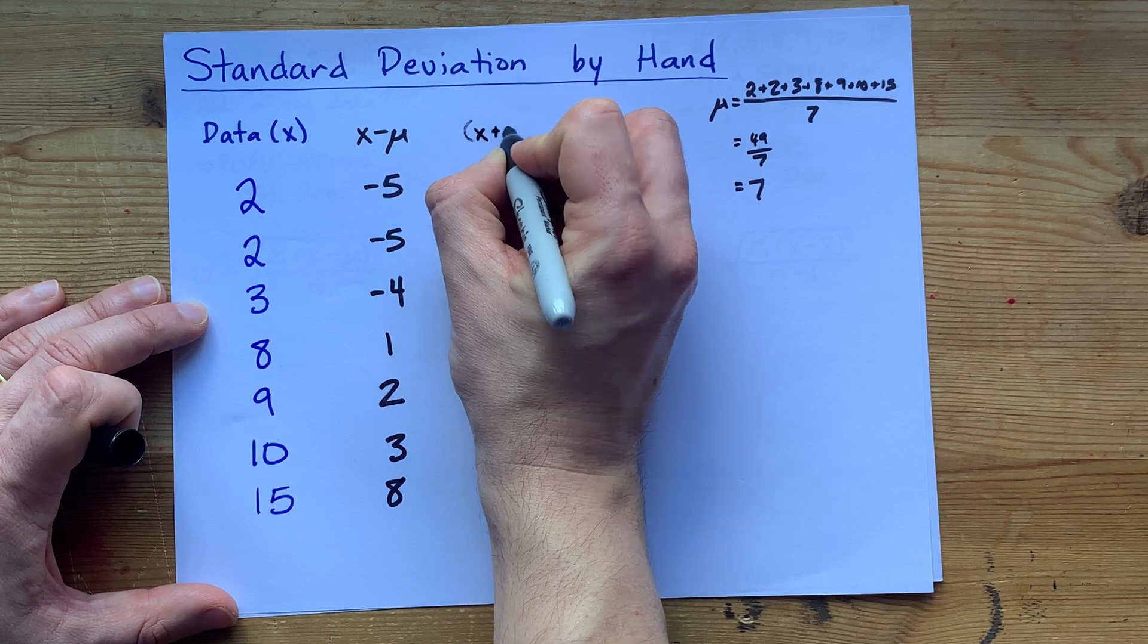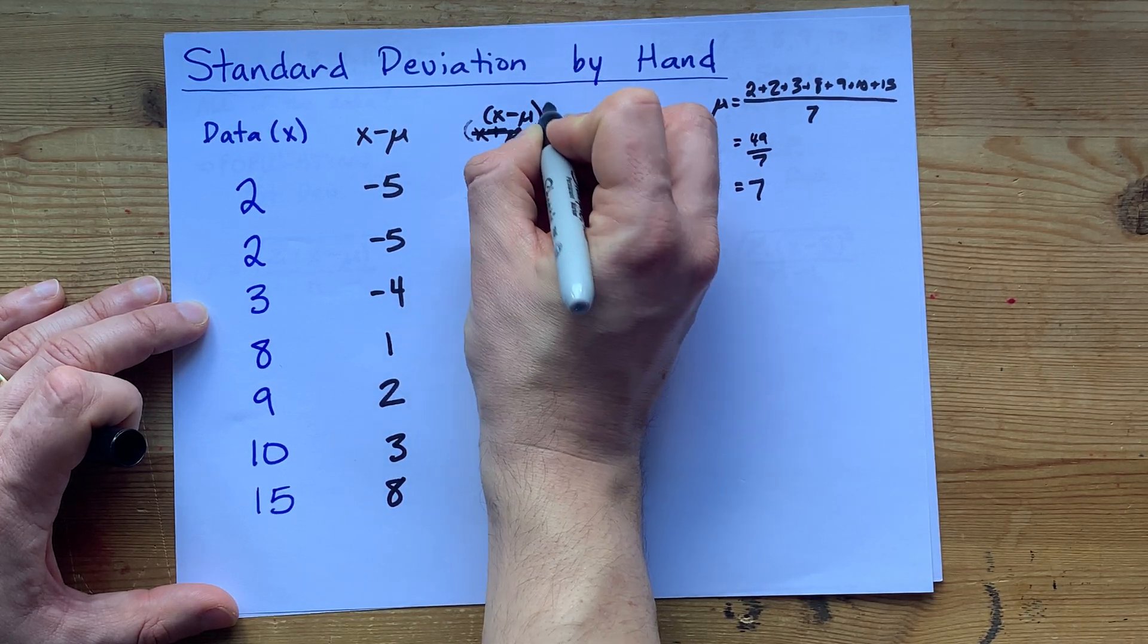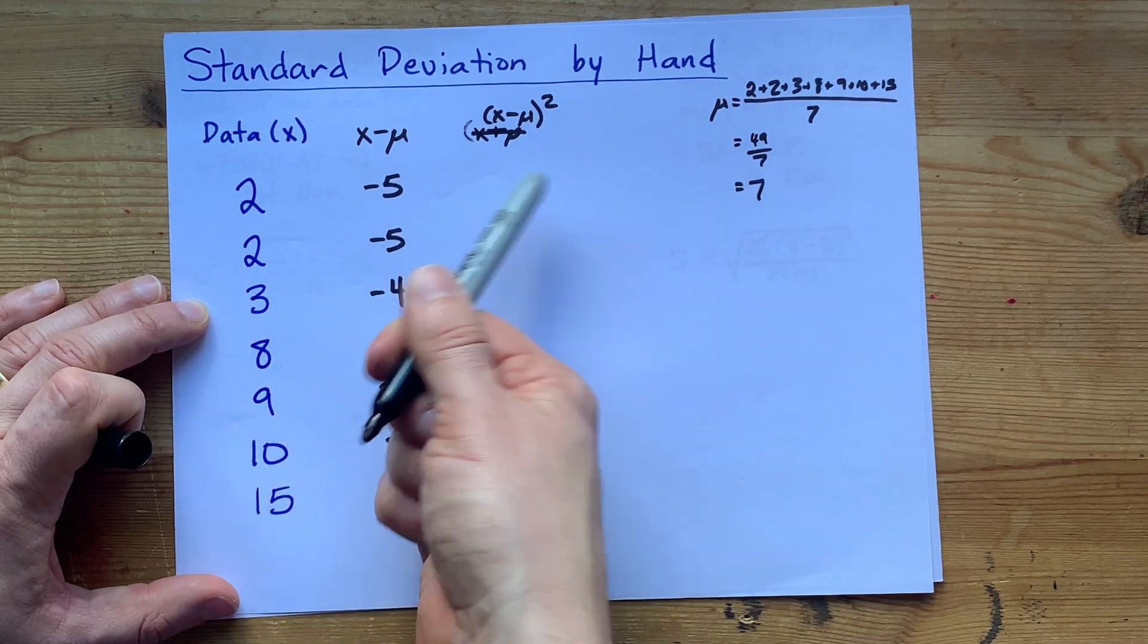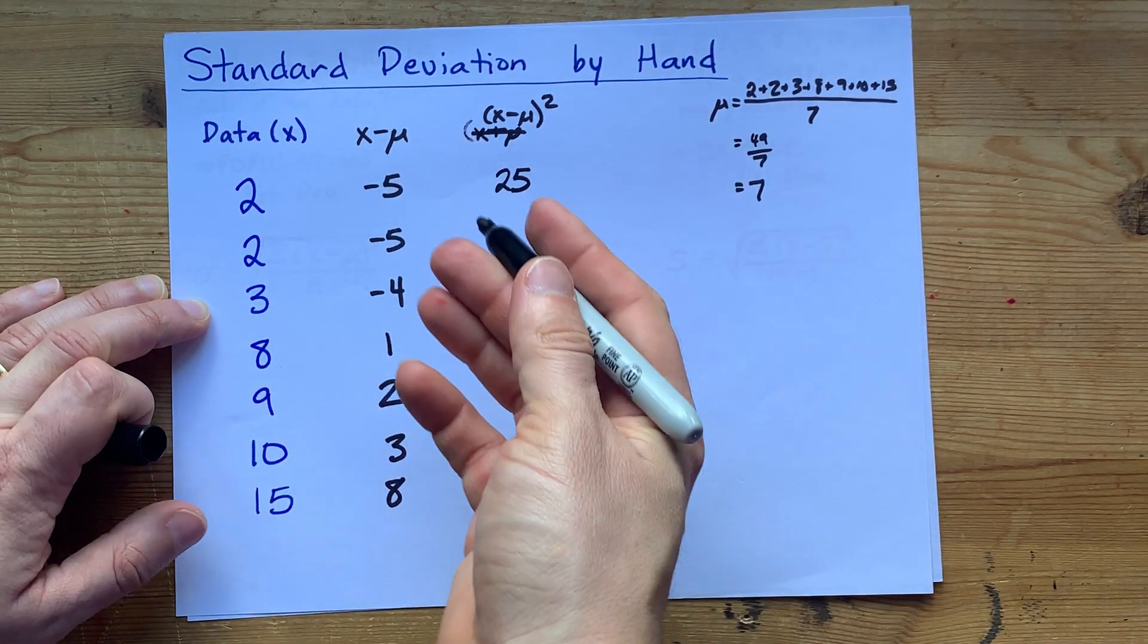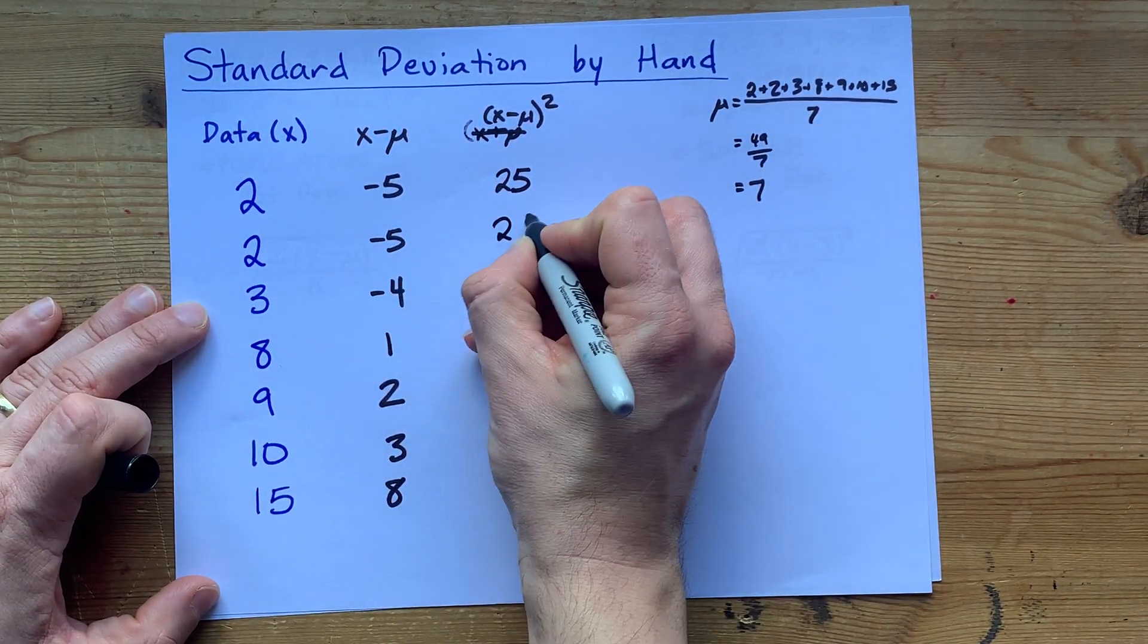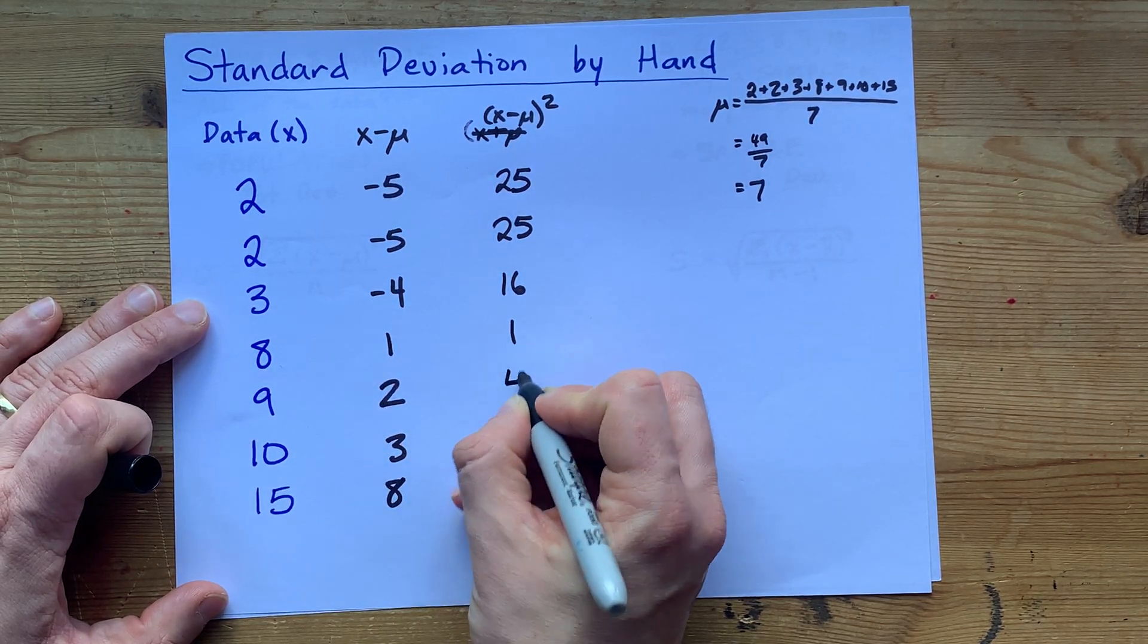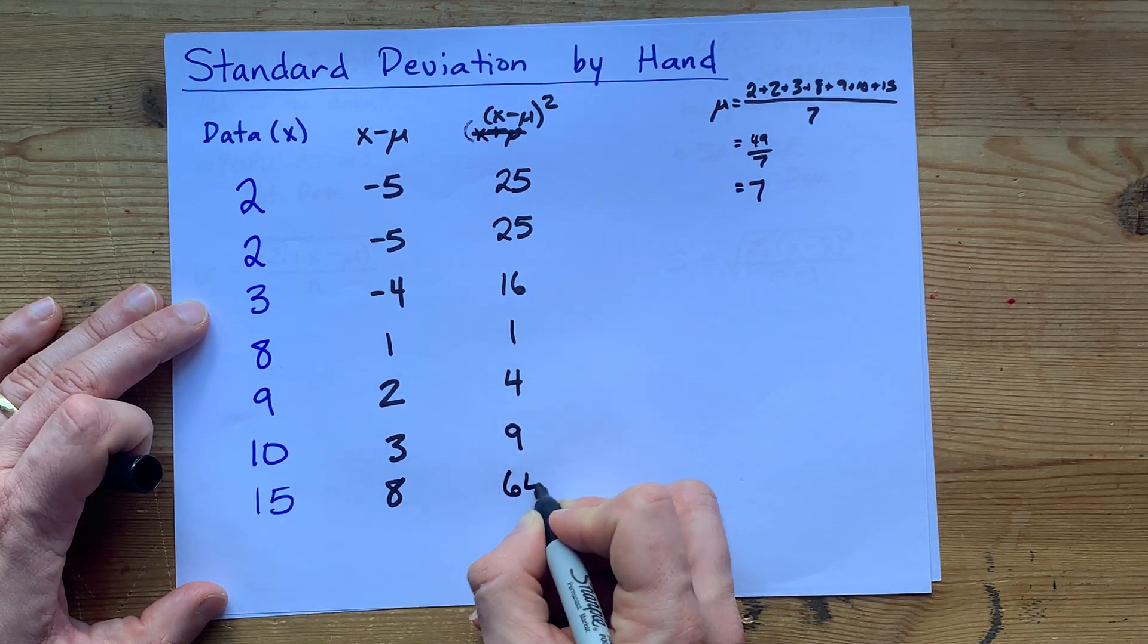Now, we're going to take those numbers, the same numbers you just calculated, and square them all. Remember, when you square a number, it becomes positive. Negative 5 squared is positive 25. Squaring, by the way, is when you multiply it by itself. Negative 5 squared is positive 25, negative 4 is 16, 1 squared is 1, 2 squared is 4, 3 squared is 9, and 8 squared is 64.